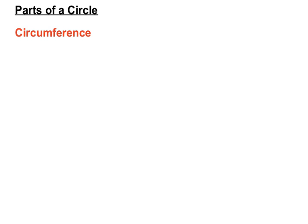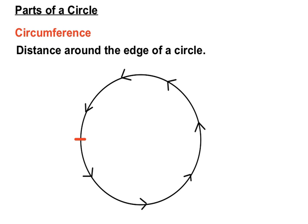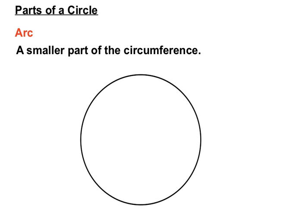The circumference of a circle is the distance around the edge. So if we started where the red marking is and went in the direction of the arrows all the way around the circle back to our starting point, that distance is called the circumference. And an arc is just one little section of that circumference — that section marked in red is part of the circumference, and we'd call that red bit an arc.